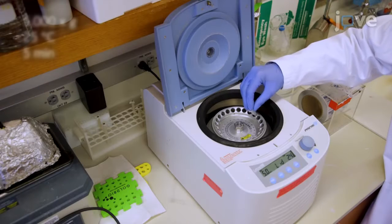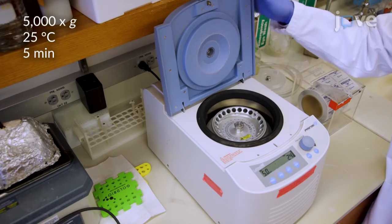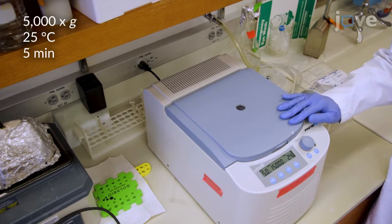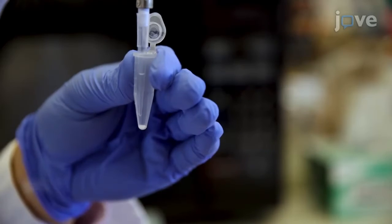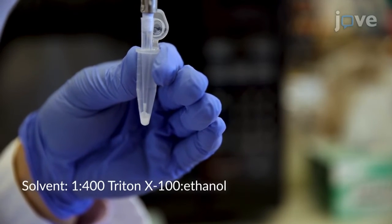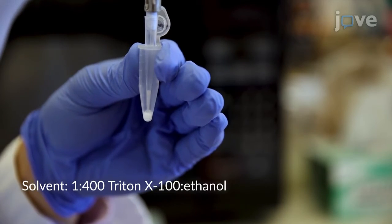Centrifuge 50 microliters of 1 micron non-functionalized polystyrene beads. Discard the supernatant, leaving as little water remaining as possible. Resuspend the beads in 50 microliters of solvent, then mix thoroughly by pipetting.